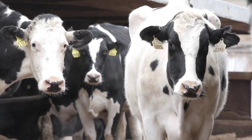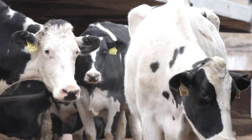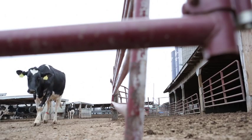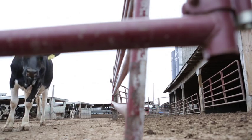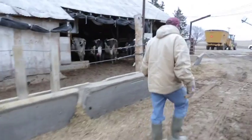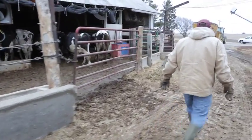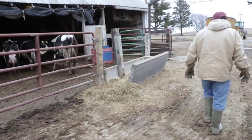Heifers reach puberty at about 12 months of age which means they have their first ovulation. Follicles are growing prior to this time but the follicles do not grow large enough or produce enough estrogen to cause the heifer to show estrus and have ovulation.